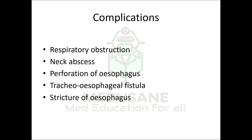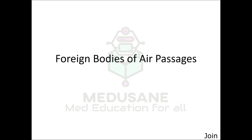Complications of an esophageal foreign body include respiratory obstruction — a large foreign body pushes the trachea and can also cause laryngeal edema. A long-standing foreign body can get infected, leading to neck abscess, perforation of the esophagus, or development of a tracheoesophageal fistula. It can also cause ulceration, fibrosis, and stricture of the esophagus. Therefore, a foreign body should be removed as early as possible.